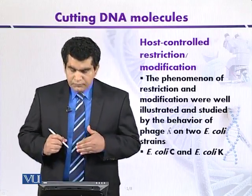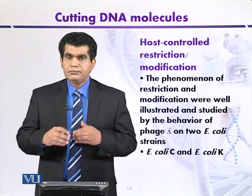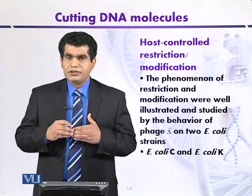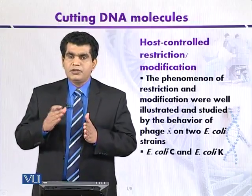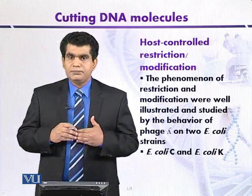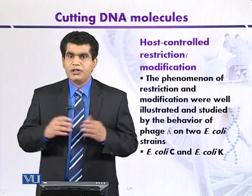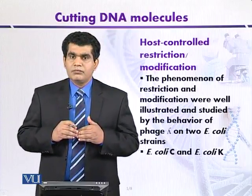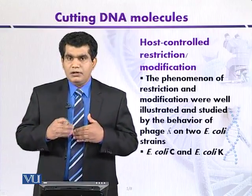This mechanism of restriction and modification can be studied using two host strains of E. coli: E. coli C and E. coli K. If bacteriophages are first grown on E. coli C and propagated on both E. coli C and E. coli K, then on the first strain, E. coli C, the bacteriophages will not be restricted — indicated by high efficiency of plating and a high number of plaques. Whereas on the second strain, E. coli K, the bacteriophages will be restricted, indicated by a low number of plaques and low plating efficiency.